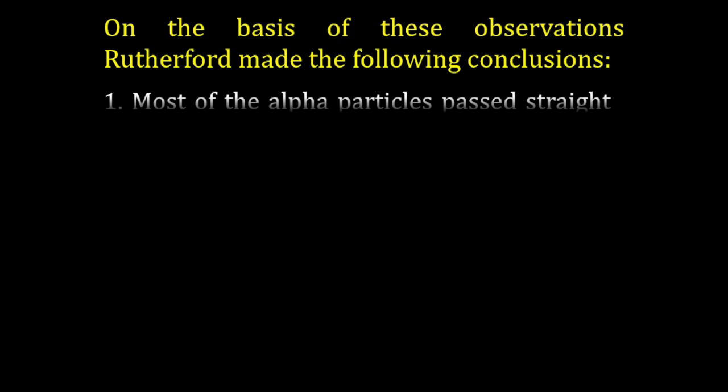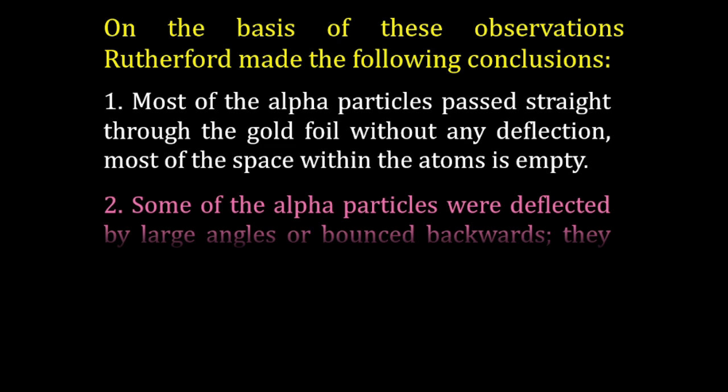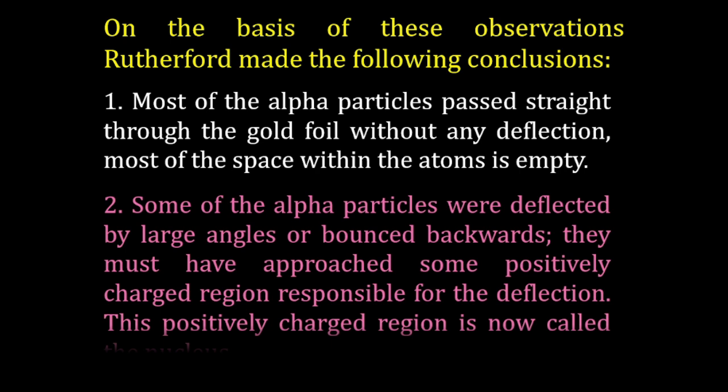On the basis of these observations, Rutherford made the following conclusions. Most of the alpha particles pass in a straight line through the gold foil without any deflection — that means most of the space within the atom is empty. Some of the alpha particles were deflected by a large angle or bounced backward — that means they must have approached some positively charged region responsible for the deflection. This positively charged region is now called the nucleus.